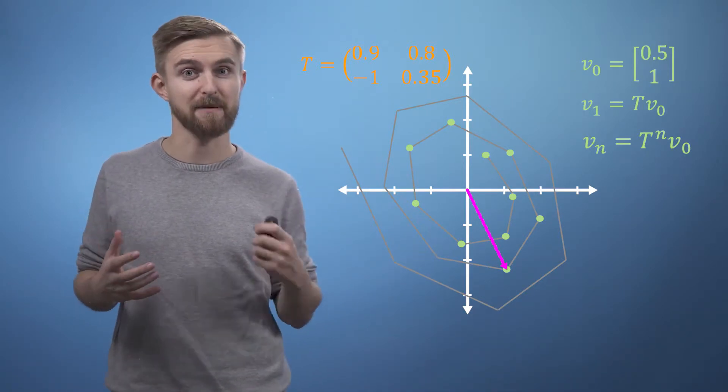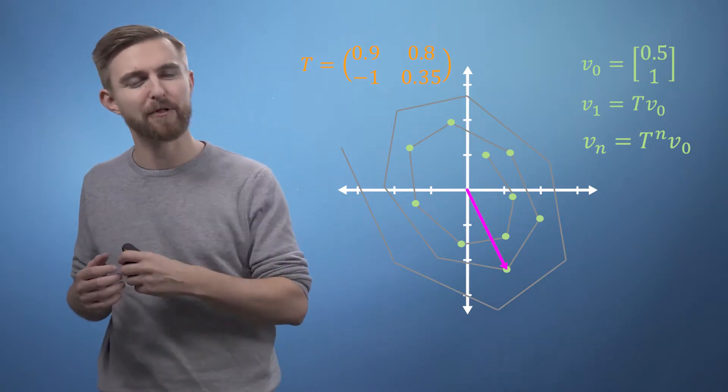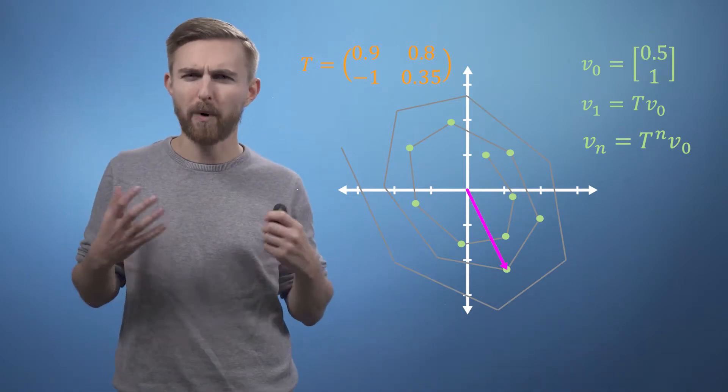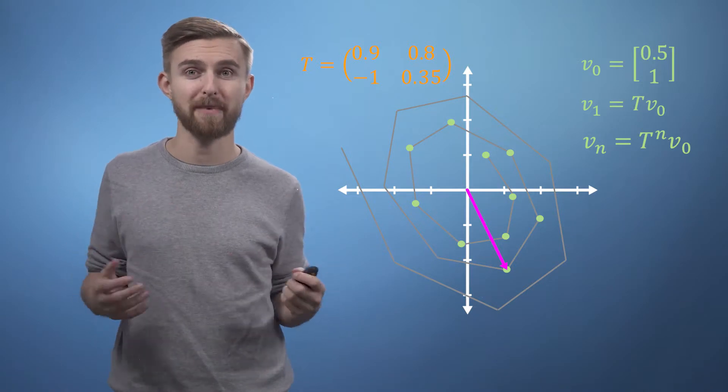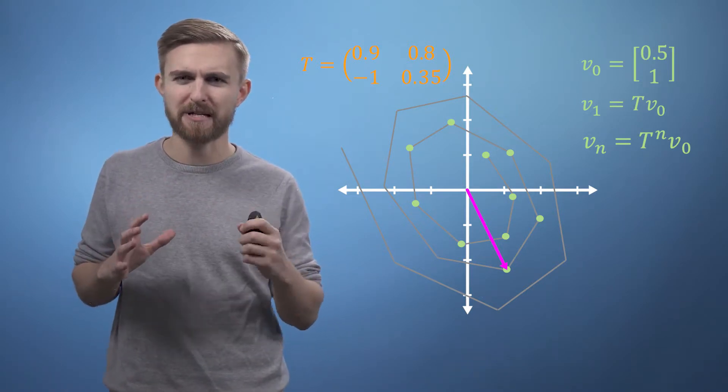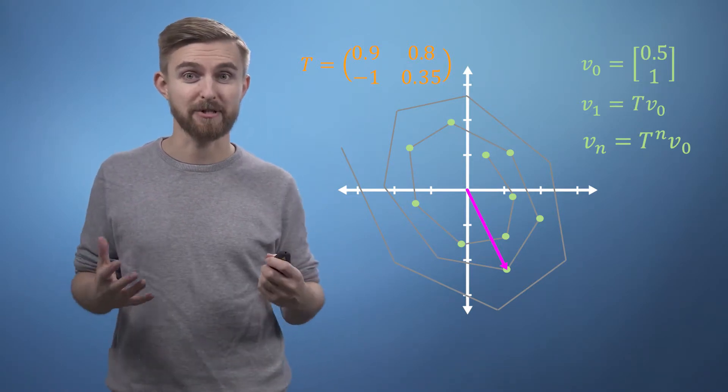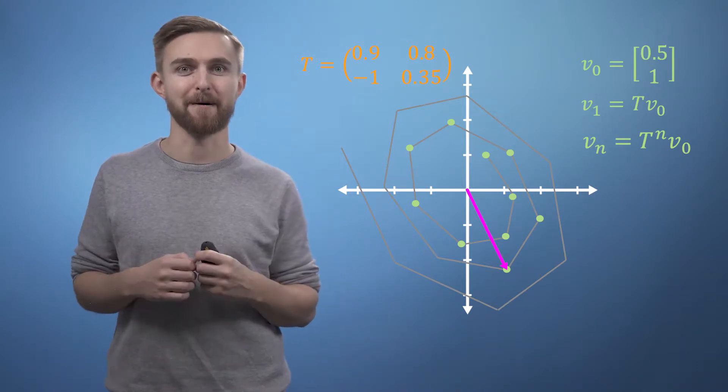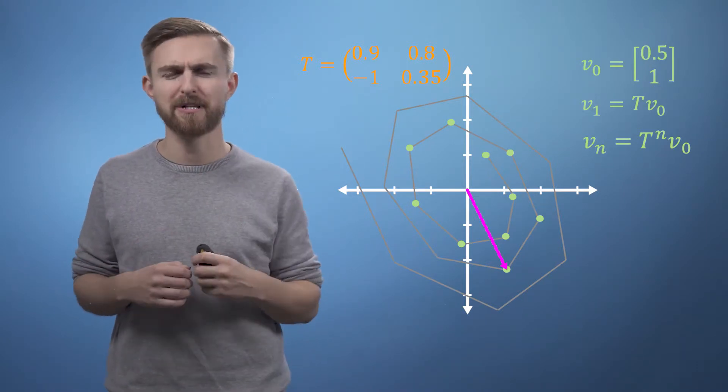If all the terms in the matrix are zero, except for those along the leading diagonal, we refer to it as a diagonal matrix. And when raising matrices to powers, diagonal matrices make things a lot easier. In fact, have a go just now to see what I mean. All you need to do is put each of the terms on the diagonal to the power of n, and you've got the answer.